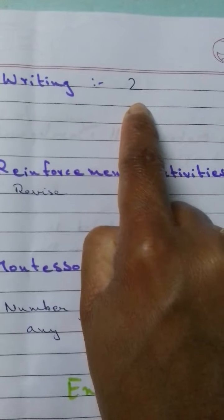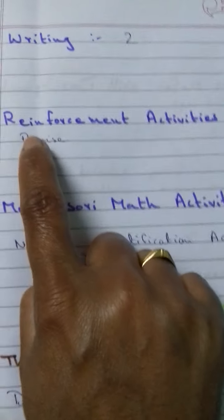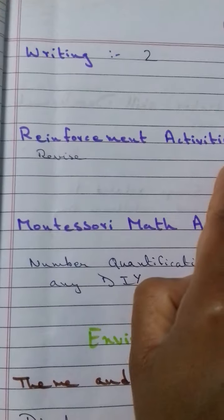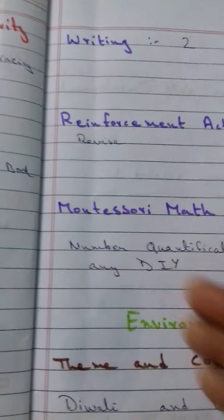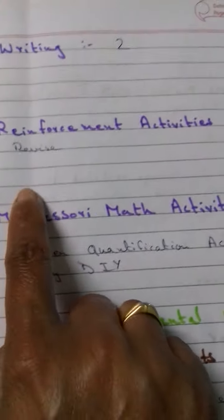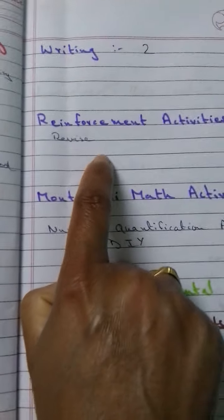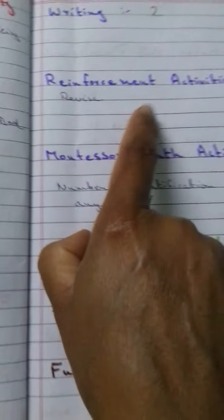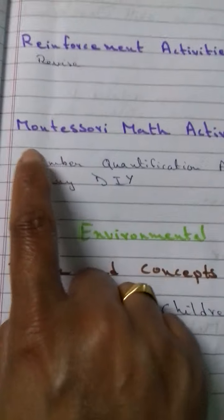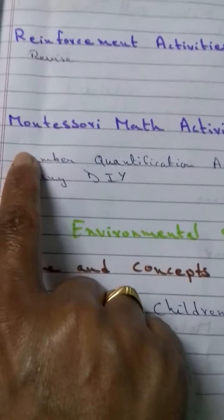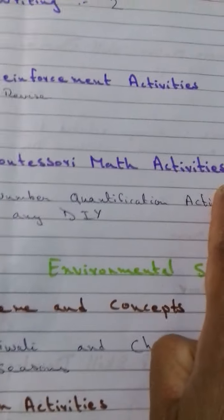Writing number 2. Then reinforcement activity — you can revise what all the child needs more practice according to the assessment you made.